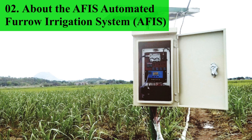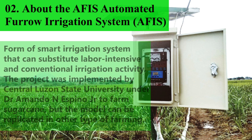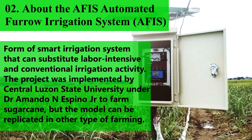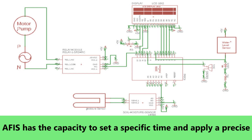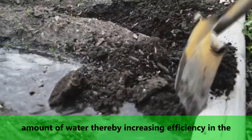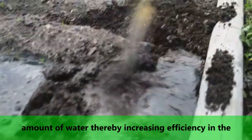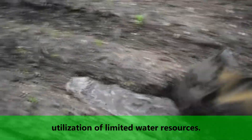The Automated Furrow Irrigation System or AFIS is a form of smart irrigation system that can substitute labor-intensive and conventional irrigation activity. The project was implemented by Santa Luzon State University under Dr. Amando N. Espino Jr. to farm sugarcane, but the model can be replicated in other types of farming. AFIS has the capacity to set specific times and apply precise amounts of water, thereby increasing efficiency in the utilization of limited water resources.